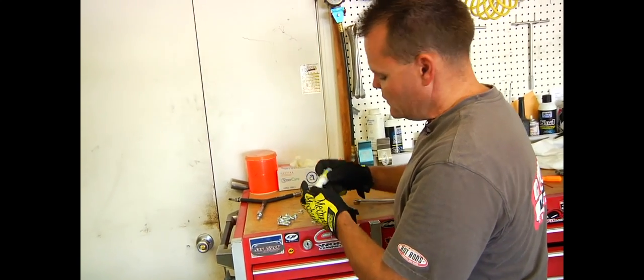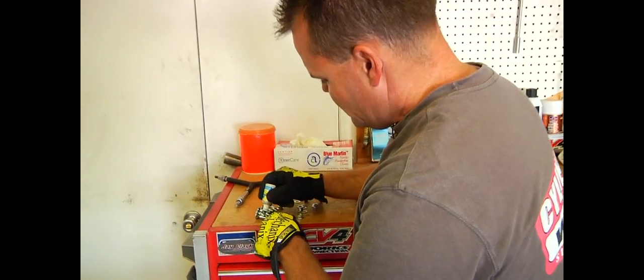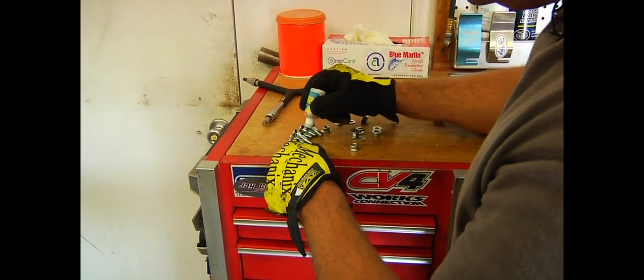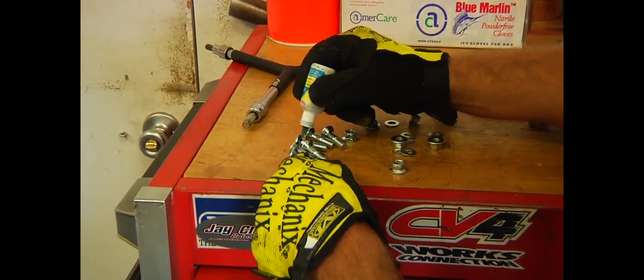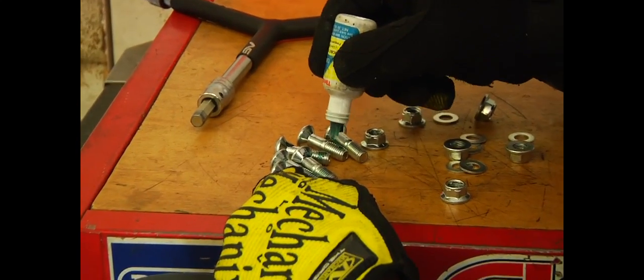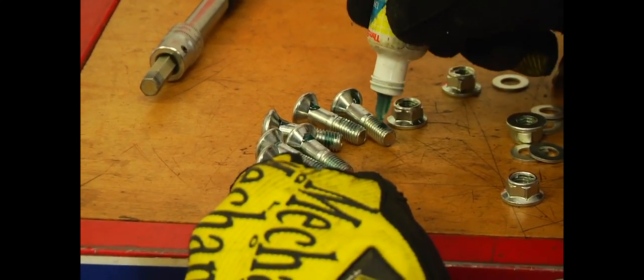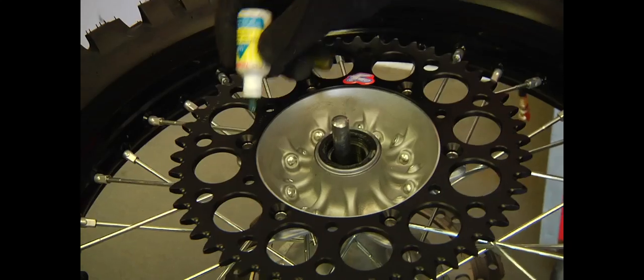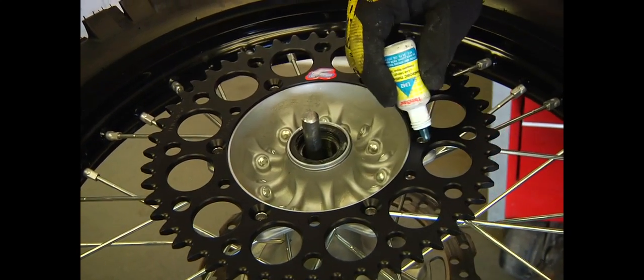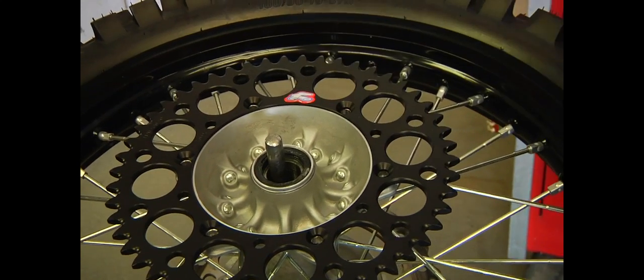Now at this point, we put a little low strength thread locker, put a little bit on the convex side of the bolt. And a little bit on the threads. This is just low strength. So you can put a little dab in here. Helps keep the sprocket bolts from ever coming loose. Just like that.